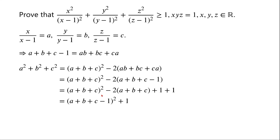The first three terms can be written as (a + b + c - 1)², which is greater than or equal to 0. So we can now write a² + b² + c² ≥ 1.